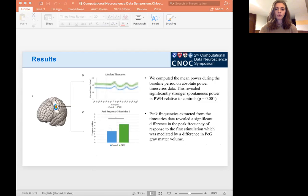This next slide gives a visual representation of two important findings. We computed the mean power of the spontaneous neural activity during the baseline period, which revealed that persons with HIV had significantly increased absolute power during this period relative to controls, which strengthens evidence previously shown by my colleague Rachel Spooner. On the bottom right, I have shown a bar graph of the peak frequency responses to the first somatosensory stimulation, in which you can see a marked increase in the responses of persons with HIV relative to controls, which is fully mediated by postcentral gyrus volume.